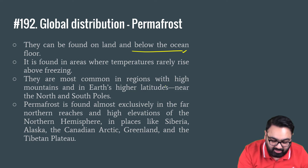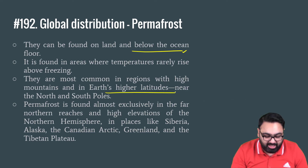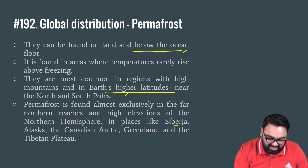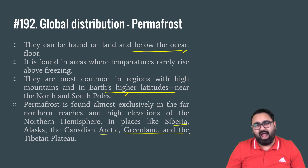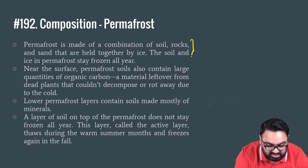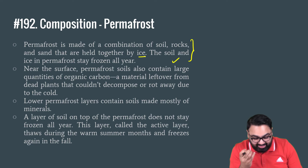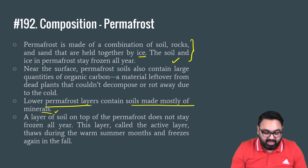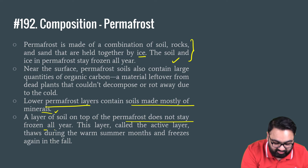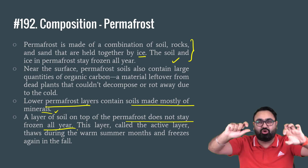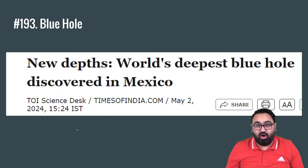Permafrost is most common in regions with high mountains and in the Earth's higher latitudes — near the north and south poles — where there is extremely harsh temperature: Siberia, Alaska, Canadian Arctic, Greenland, and the Tibetan Plateau as well. Their composition is a combination of rock, soil, and sand, all held together with ice — which is why when the ice starts to melt, all of that gets disintegrated. The lower layer is mostly made up of minerals. The top layer of soil above the permafrost does not stay frozen throughout the year, but underneath it you will find the frozen ice — that is the concept of permafrost.